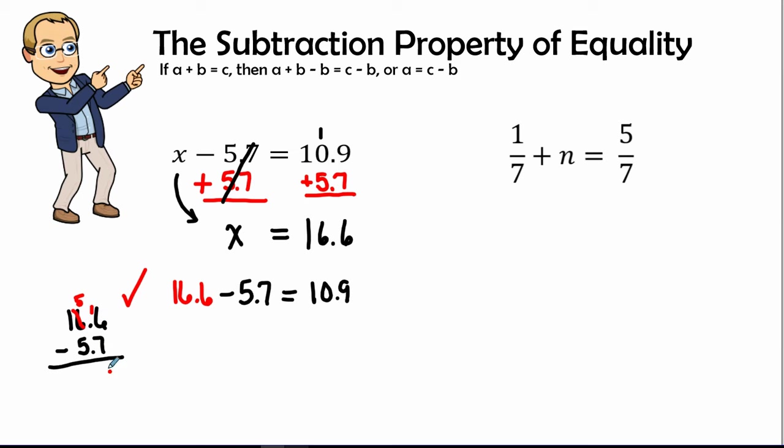16 minus 7 is 9, 5 minus 5 is 0, and 1 minus 0 is 1, giving us 10.9. We know that 10.9 here equals both sides, therefore our answer is correct.